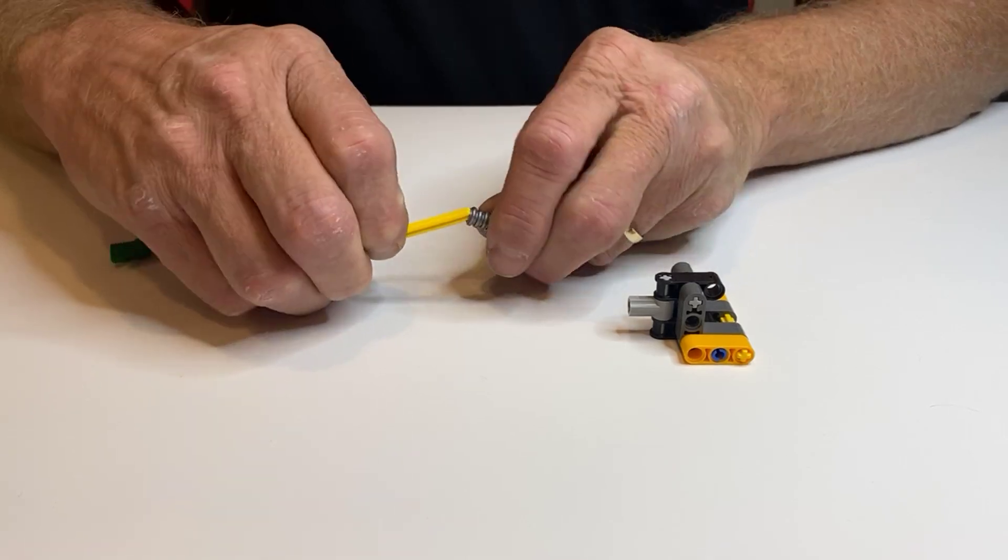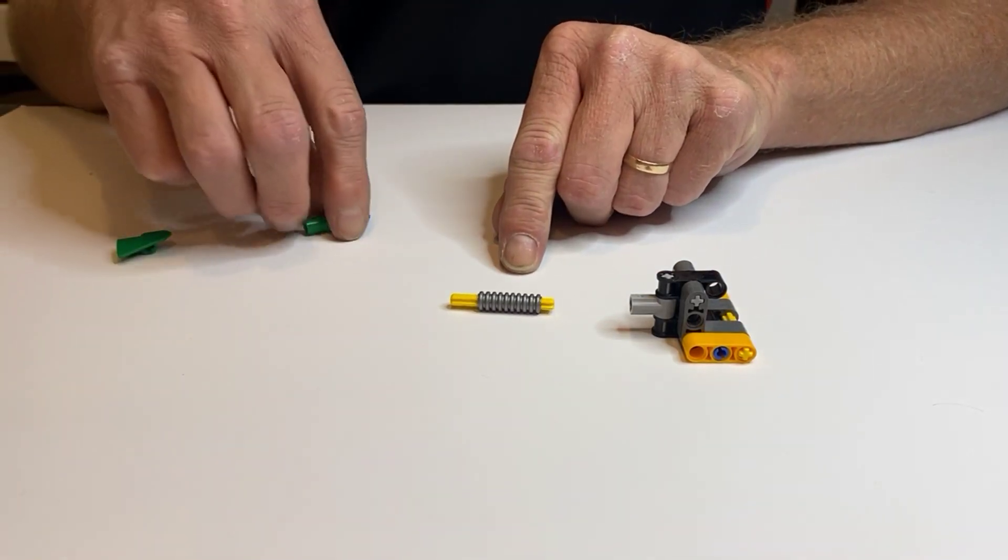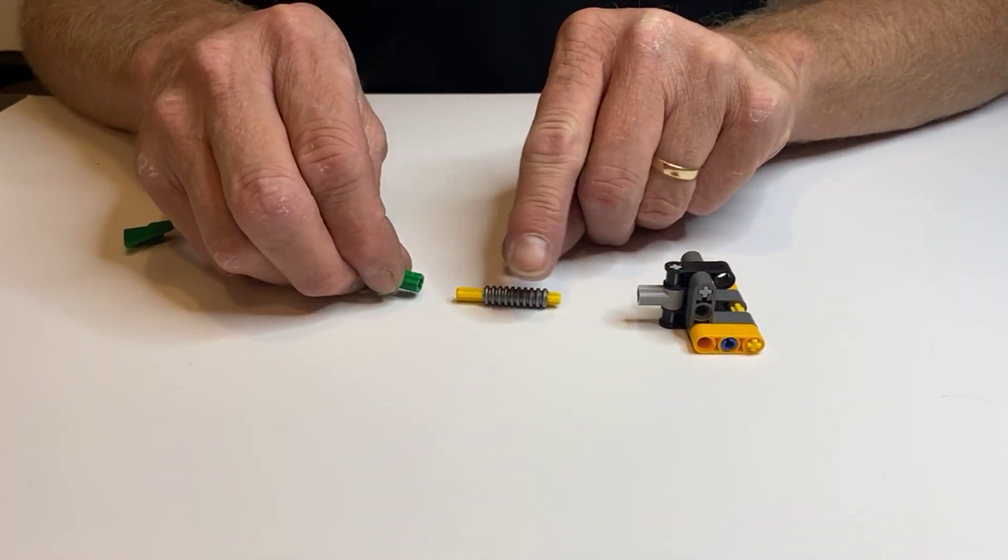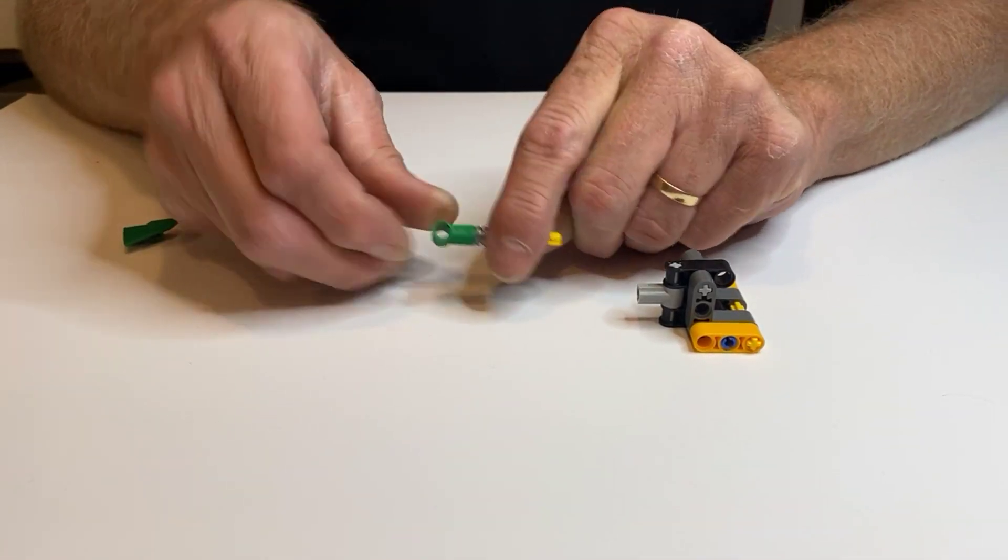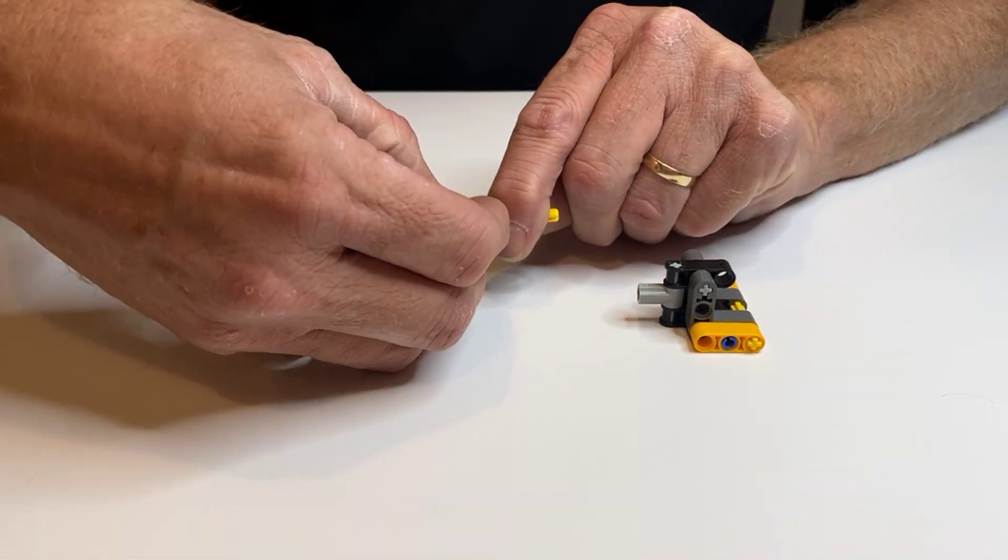Now take the other yellow 5m axle, take your gray tube and stick the gray tube on there. Take your green catch, put it on there like so. Take your blue peg with cross.